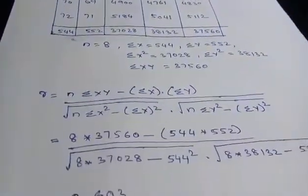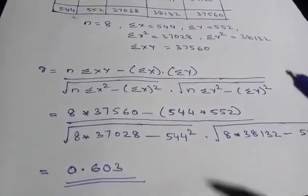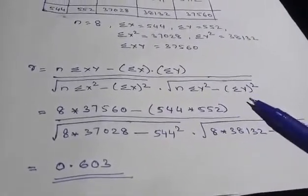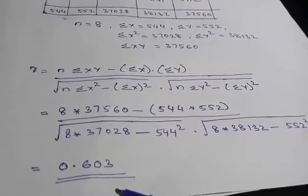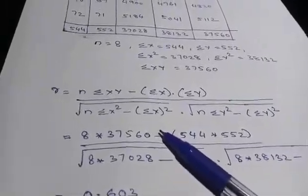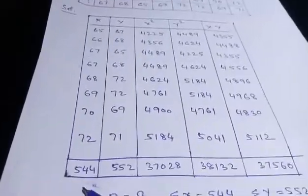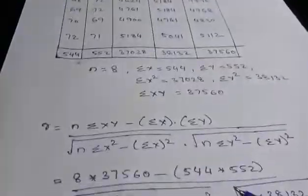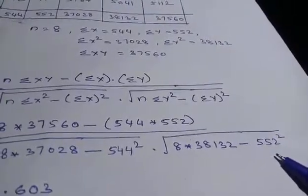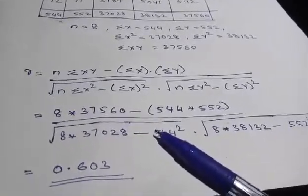Now come to the formula: r is equal to n into sigma xy minus sigma x into sigma y divided by root of n into sigma x square minus sigma x the whole square into root of n into sigma y square minus sigma y the whole square. Substitute everything, you will get the answer as 0.603. You have to note that this is sigma x the whole square. In the table you are having sigma x as 544 right. So this is sigma x and here sigma x, so 544 square here, 552 square. Substitute and you will get the answer. Hope this is clear for you. Thank you.